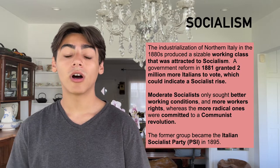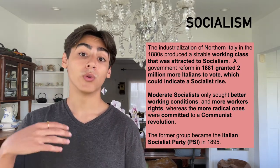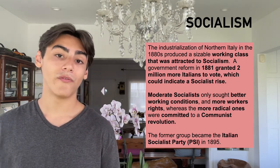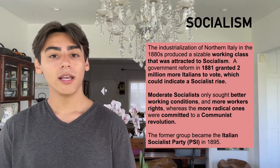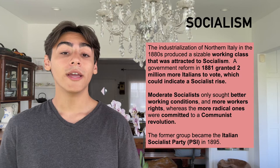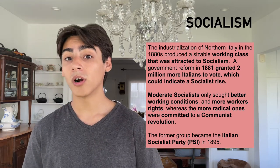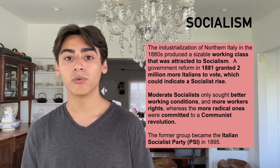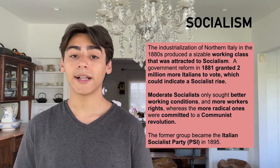The first threat we're going to discuss is something that many other nations also saw as a threat throughout the end of the 19th century and beginning of the 20th century — and this was socialism. The rise of socialism in Italy actually started off in the 1880s, when the industrialization going on in the north of the country started to generate a sizable working class out of the necessity of the factories and industries. By 1881, it became extremely clear that socialism was going to be a very prominent ideology, given that a government reform granted around 2 million Italians of the working class the power to vote.